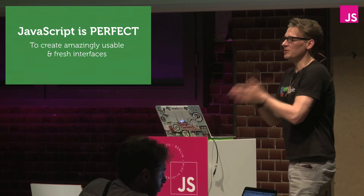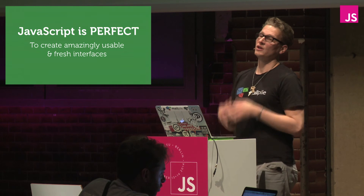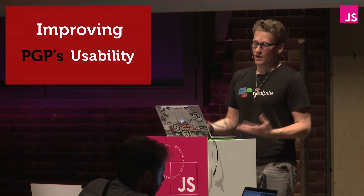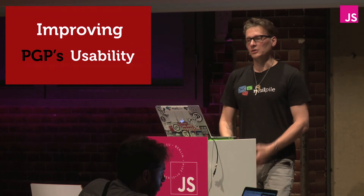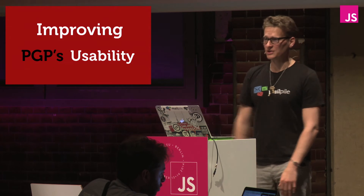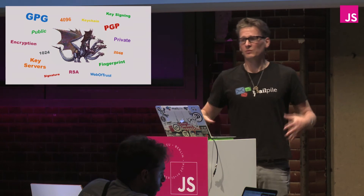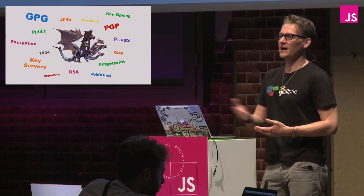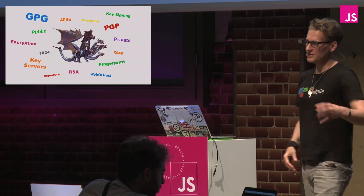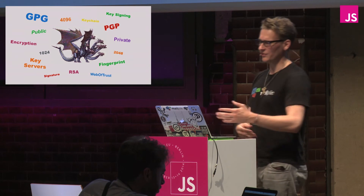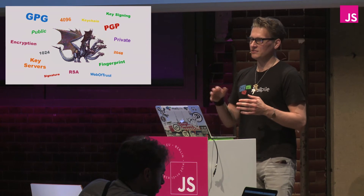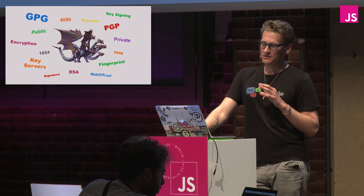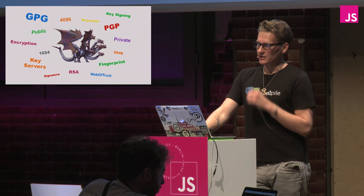JavaScript is absolutely perfect for creating amazingly fresh and usable interfaces, and that's one of the biggest things that PGP needs. When I got involved with it, everybody was like 'oh PGP the interface, can you do something, you're the designer, please help.' PGP is like this multi-headed hydra — depending on who you talk to, they'll say the key servers are the problem, or no it's the fingerprint or the web of trust, and it just goes on and on. I have a theory about why it's such a nightmare and I'll get to that in a few more slides.